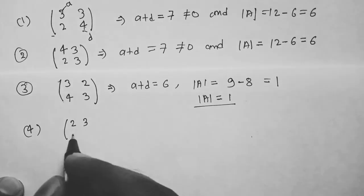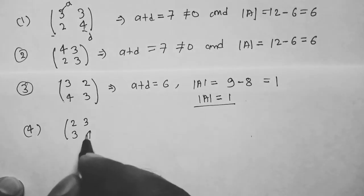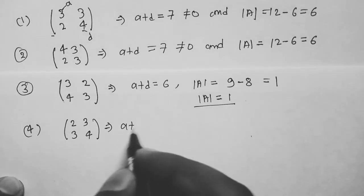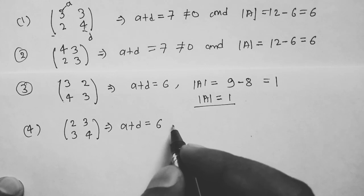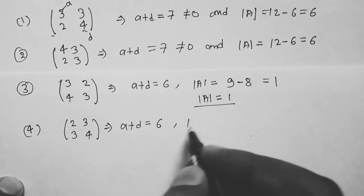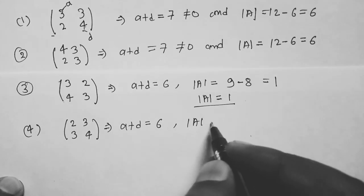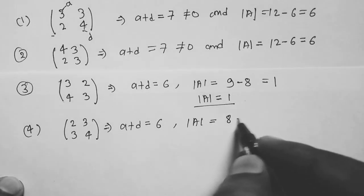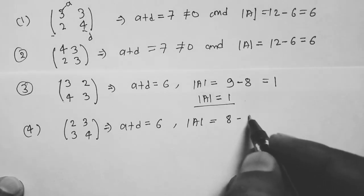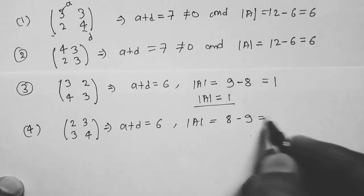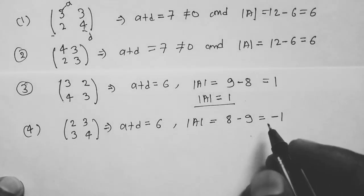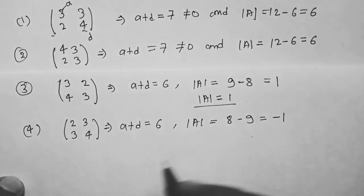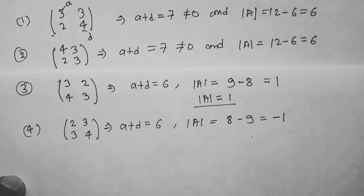For the fourth option, matrix [[2,3],[3,4]]: A plus D equals 2 plus 4 equals 6, and determinant equals 8 minus 9 equals minus 1. So this option is also wrong.